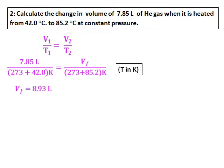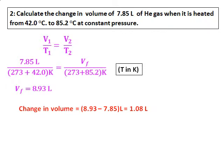All values are given; we need to calculate the new volume. Remember to convert temperature to Kelvin. Doing all the calculations, the final volume is 8.93 liters. Since the question asks for the change in volume, the change is the new volume minus the original volume. As expected, since volume and temperature are directly related, when the temperature increases, the volume also increases.